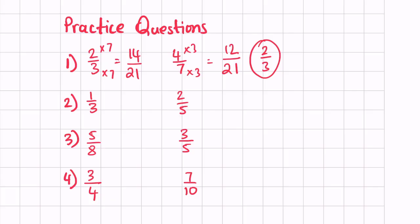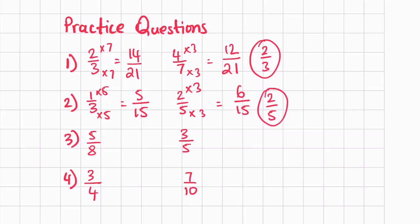Next, one third and two fifths. We multiply one third by 5, giving us 5 over 15, and two fifths by 3, giving us 6 over 15. We can see 6 over 15 is larger, so therefore the larger fraction is two fifths.